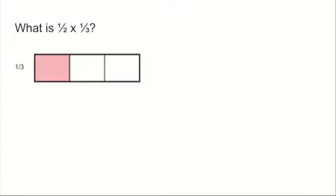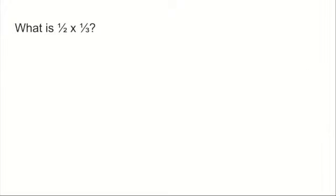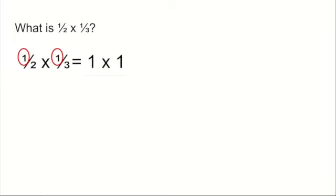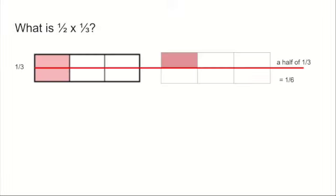I could also represent that using a horizontal line — splitting it in half the other way. And if I did that, I would still get one sixth. Using the written method, if we take the numerators, the top parts of the fraction, and multiply them together, then put them over the denominators multiplied together, we end up with one over six — exactly the same as we showed with the picture.